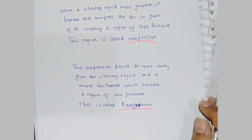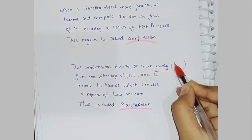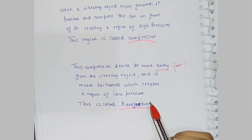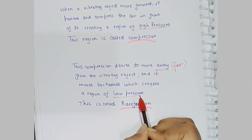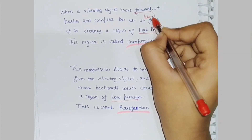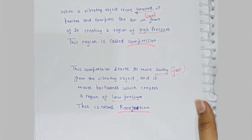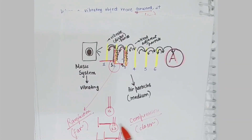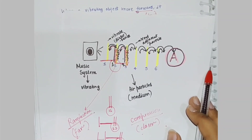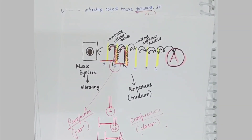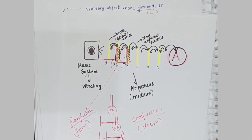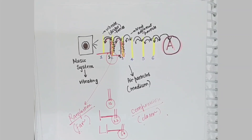So to summarize: when particles are closer to each other that is compression, and when they are far apart that is rarefaction. This is the whole idea about propagation of sound, rarefaction, and compression. I hope you understand all of this, and if there are any doubts, let me know in the comment section below. I will be posting many more videos — keep sharing and keep loving.